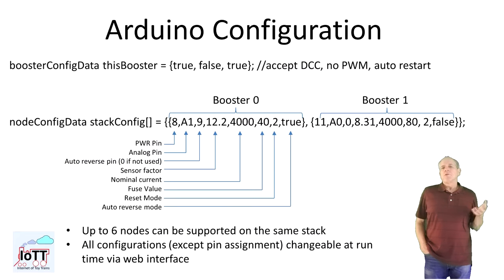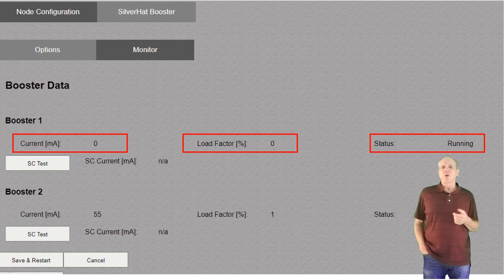Let's give it a try. For this test, I configured a booster for a nominal current of 4A. The resulting short circuit trip current therefore is 6.4A. The current range between 4 and 6.4A causes a booster overload but no immediate shutdown. On the screen we can see the track current and the overload percentage.